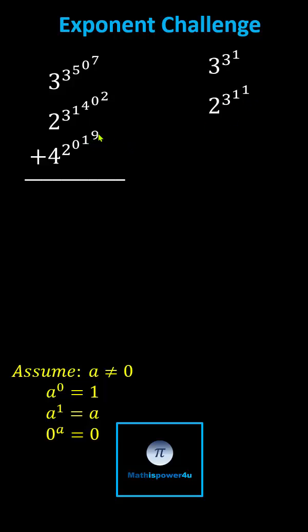For the third term, 1 to the power of 9 is 1, and 0 to the power of 1 is equal to 0. This gives us 4 to the power of 2 to the power of 0.